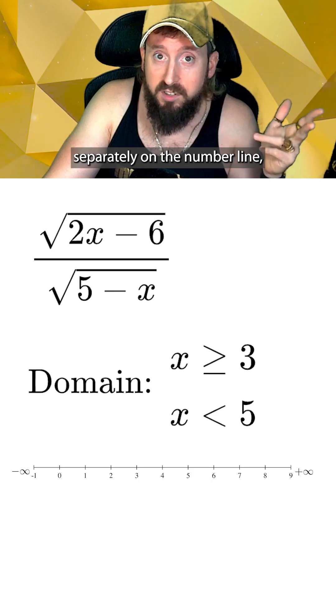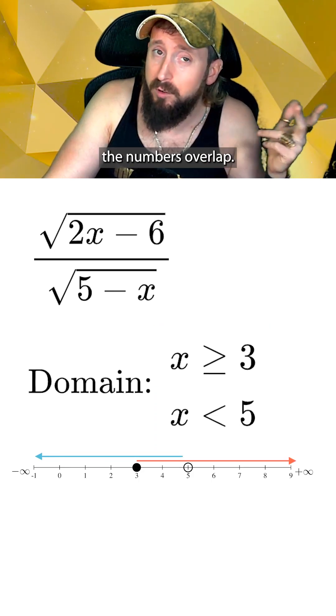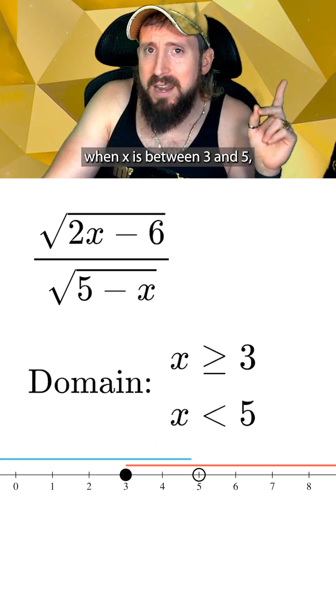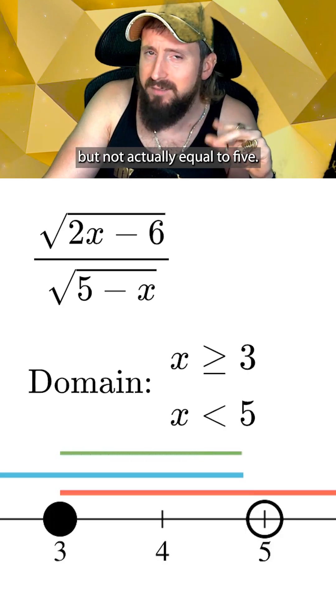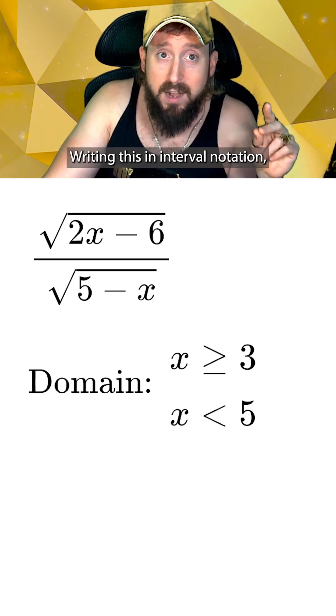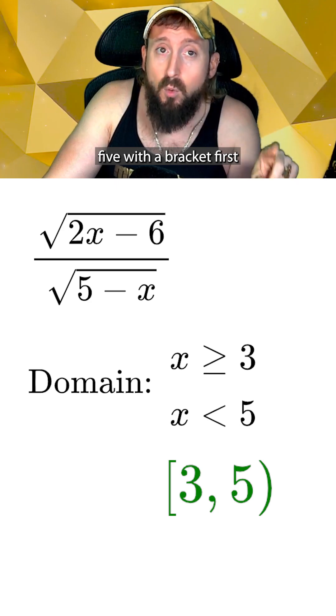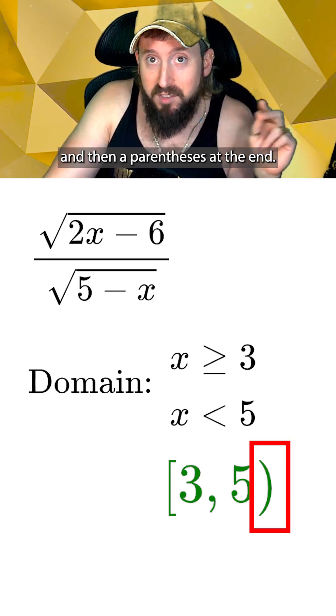If we draw these inequalities separately on the number line, we can now look for where the numbers overlap. Here we see that this happens when x is between 3 and 5, but not actually equal to 5. Writing this in interval notation, we use 3 comma 5 with a bracket first and then a parenthesis at the end.